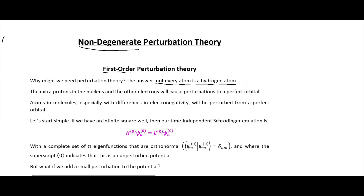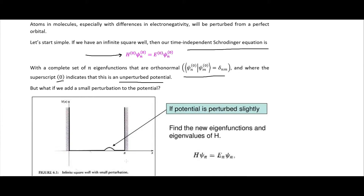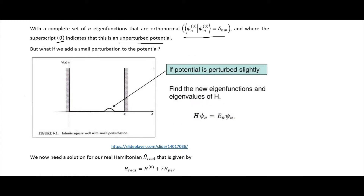We'll start simple. If we have an infinite square well, our time-independent Schrödinger equation is just this eigenvalue equation shown here in purple, with a complete set of n eigenfunctions that are orthonormal. The superscripts in parentheses indicate whether we're dealing with the unperturbed or perturbed potential.